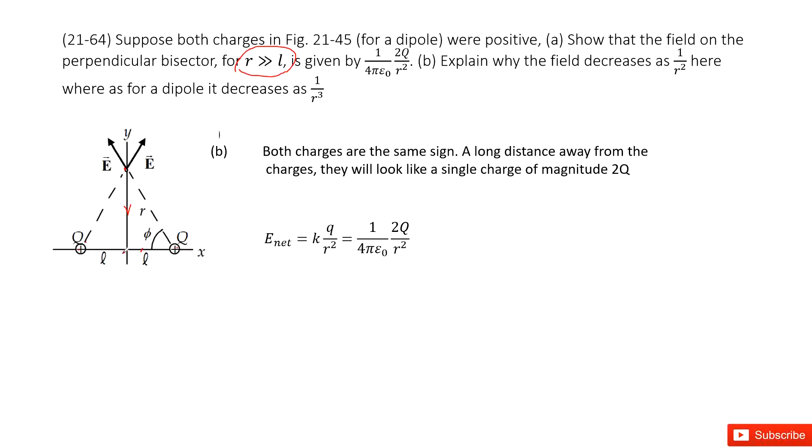This single charge has a charge quantity of 2Q, so we can write it as 1 over 4π epsilon naught times 2Q over R squared. Thank you.